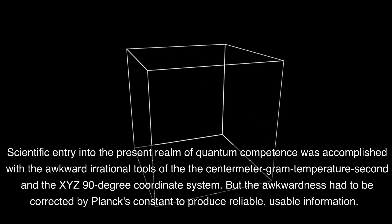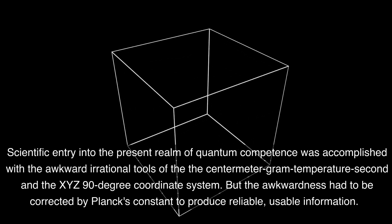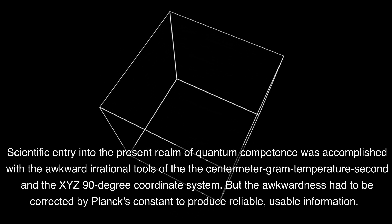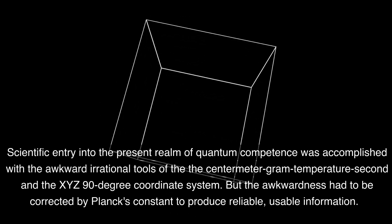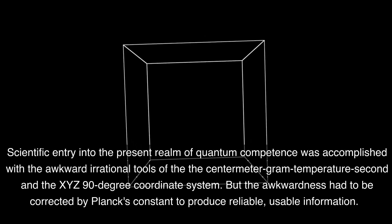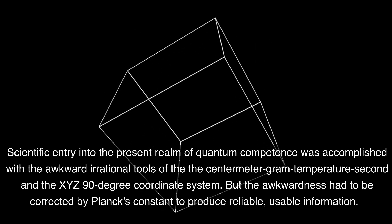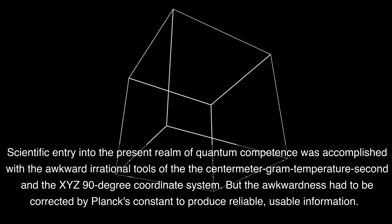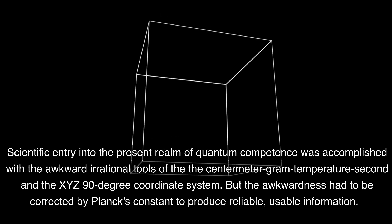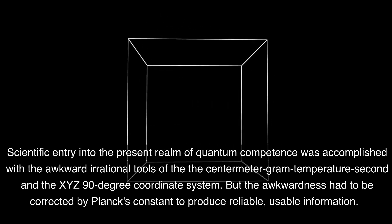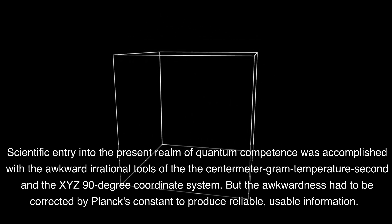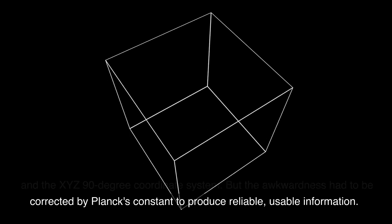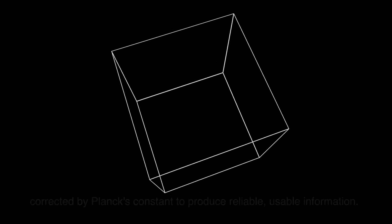Scientific entry into the present realm of quantum competence was accomplished with the awkward, irrational tools of the centimeter-gram-temperature-second and the XYZ 90-degree coordinate system. But the awkwardness had to be corrected by Planck's constant to produce reliable, usable information.